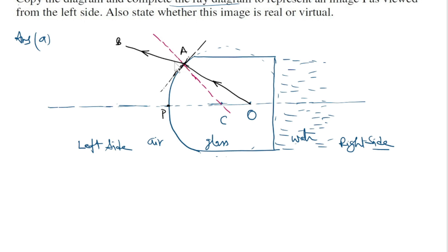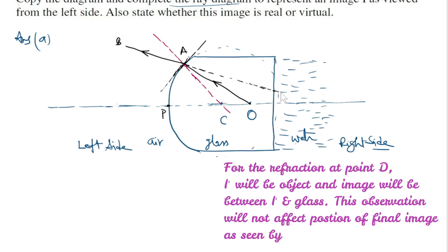Now next you extend this AB ray in the backward direction. Had there been no change in the medium at this point D, then this ray AB should have appeared to come from this point I dash. I dash should represent the final image which is virtual in nature.